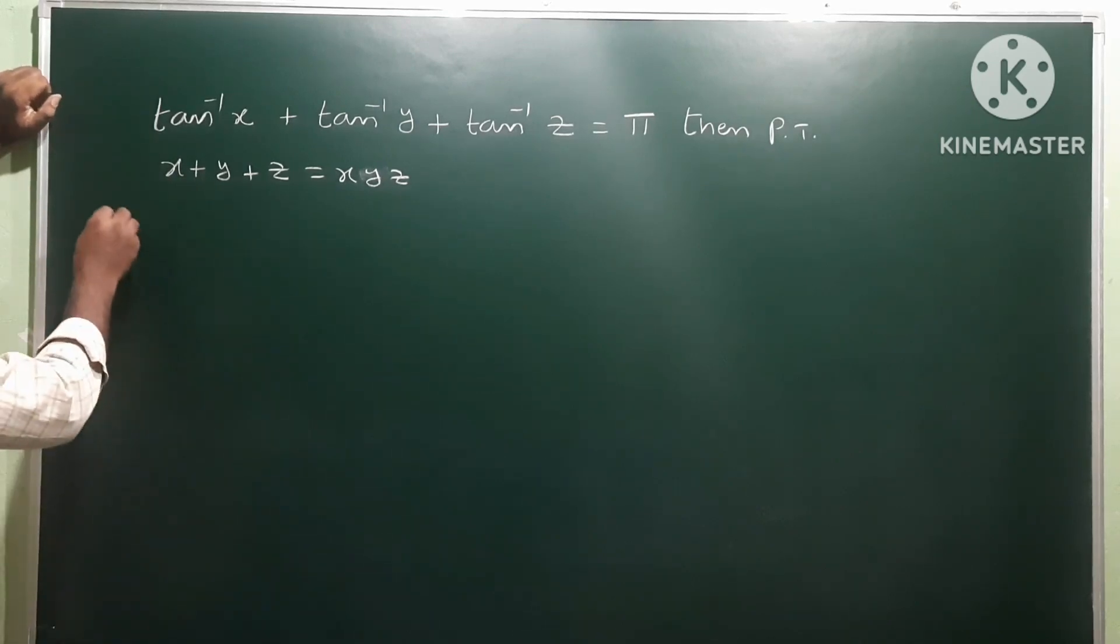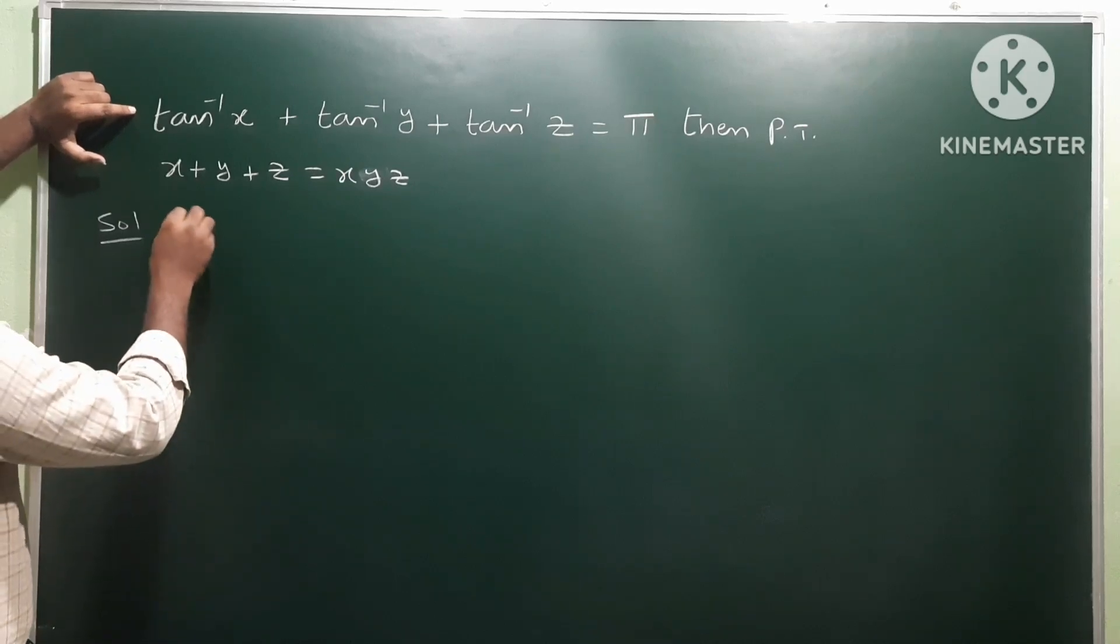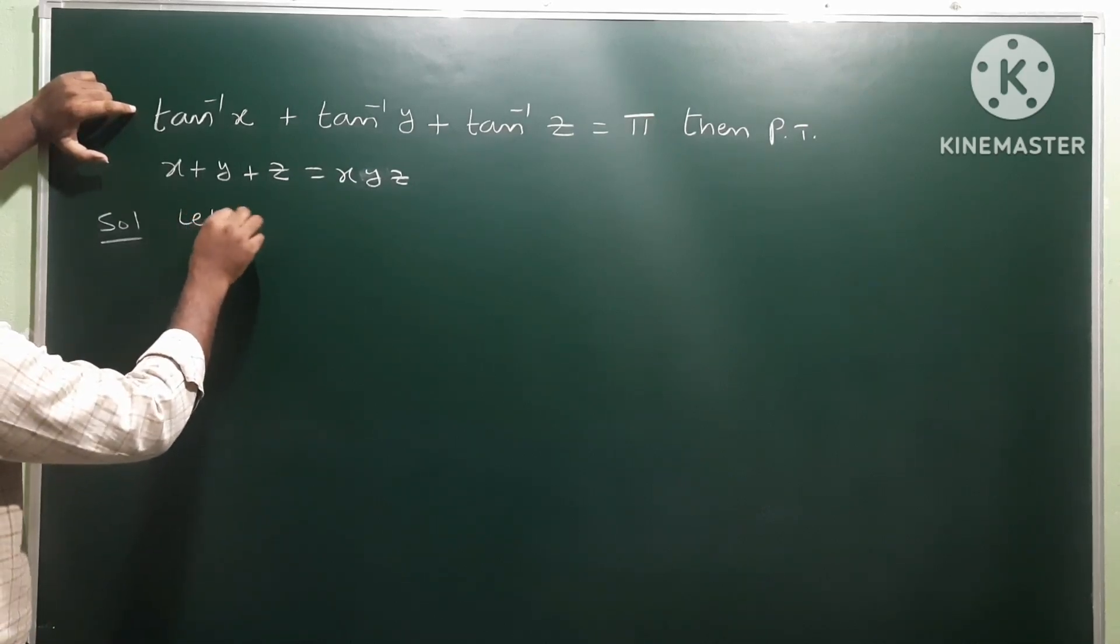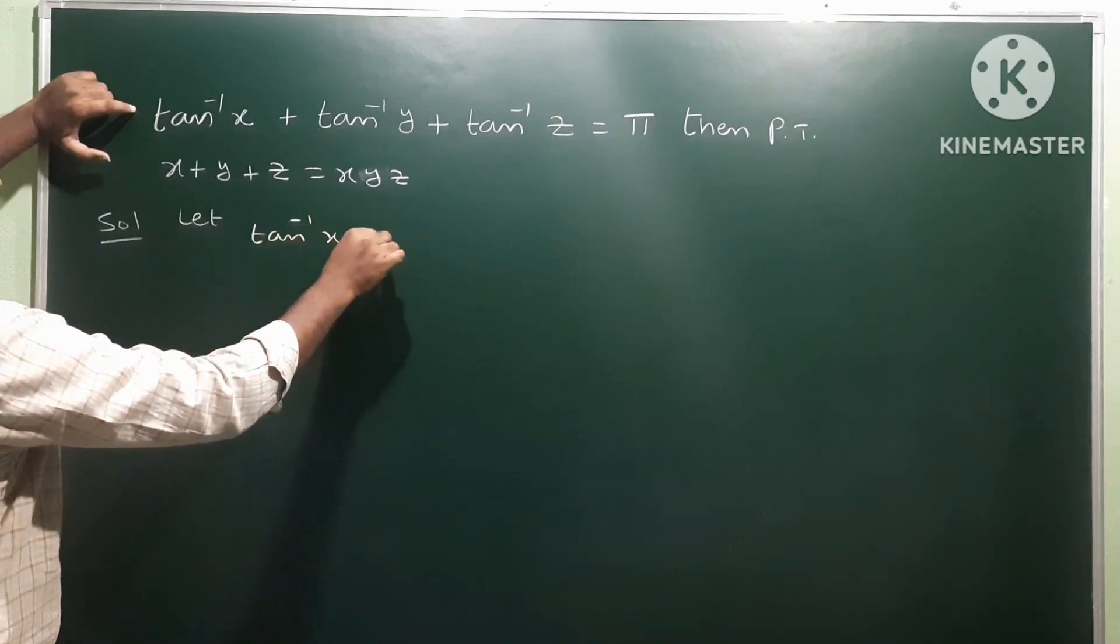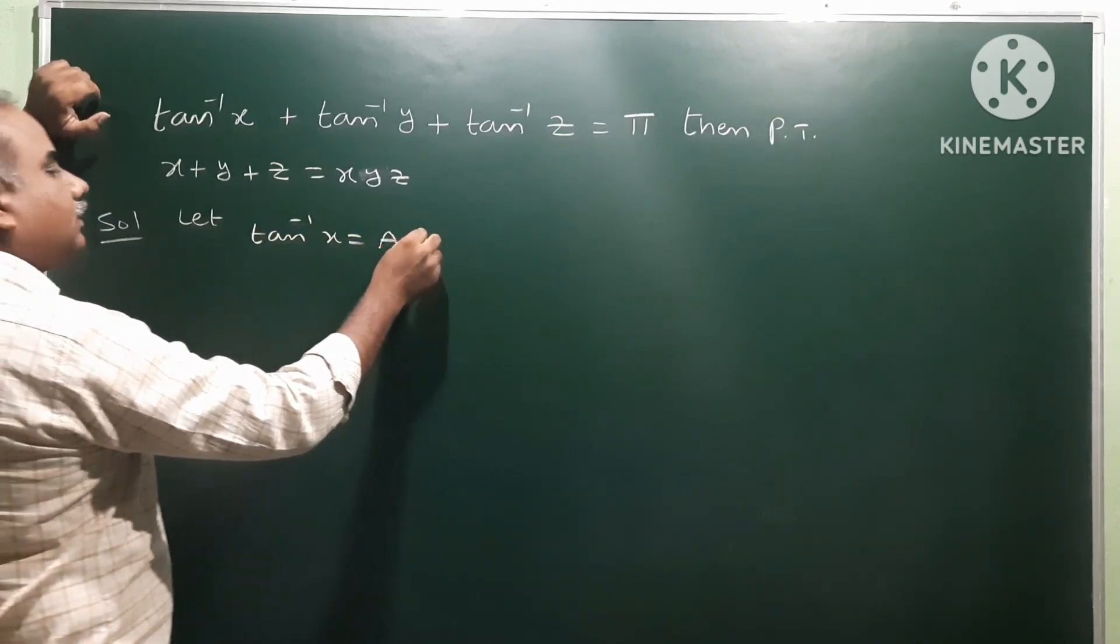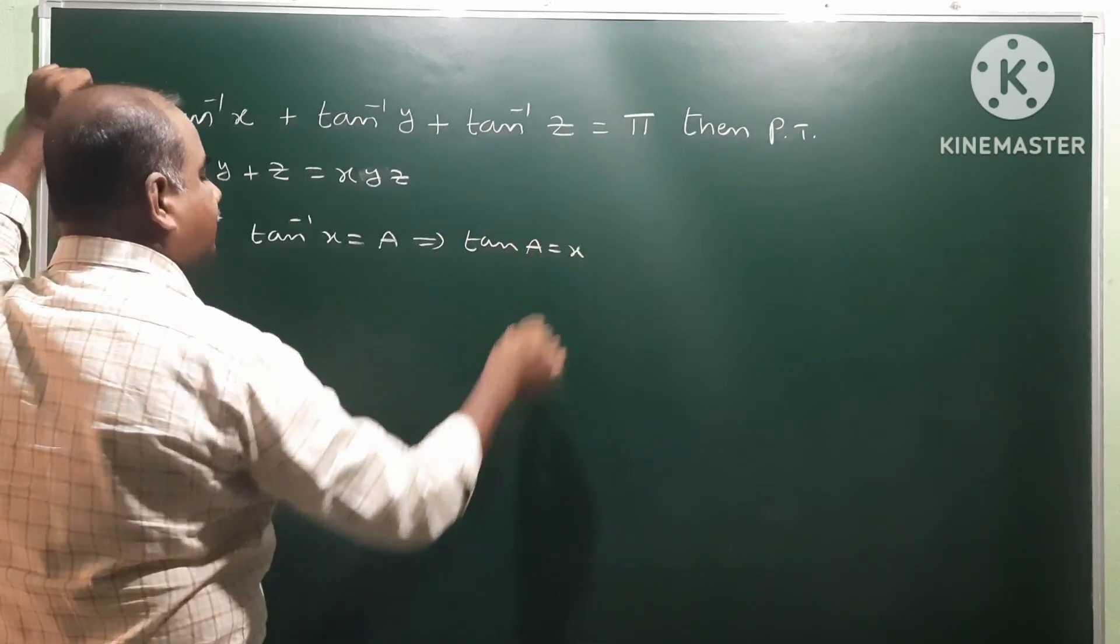So that is our question. Let us see the solution. Take tan inverse x as A. Tan inverse x is equal to A, then it becomes tan A is equal to x.